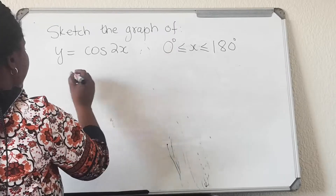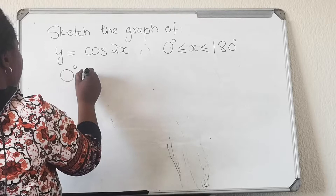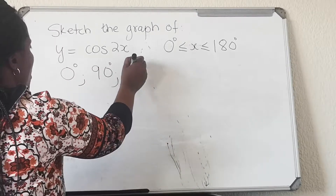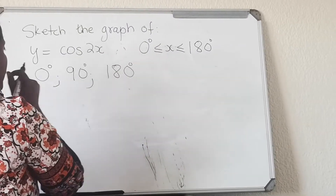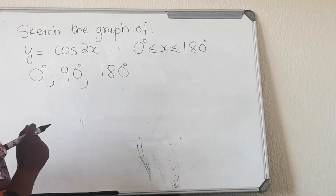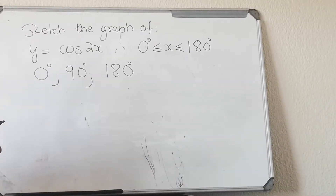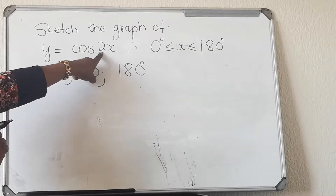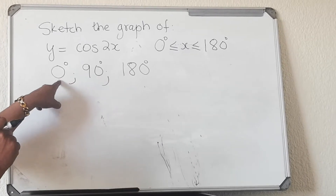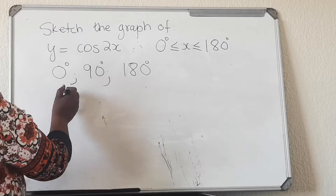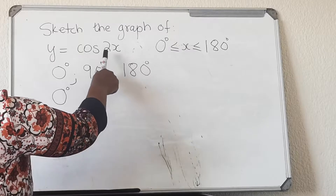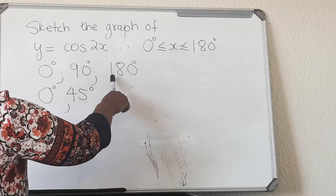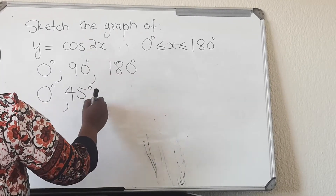You write the x-intercepts for the cosine function starting at zero degrees, then 90 degrees, then 180 degrees. Now we take our calculator and divide these values by our K, which is two: zero divided by two gives zero, 90 divided by two gives 45 degrees, and 180 divided by two gives 90 degrees.